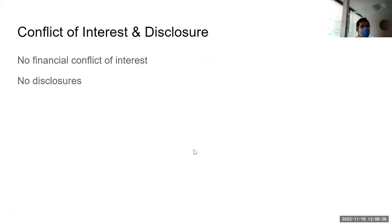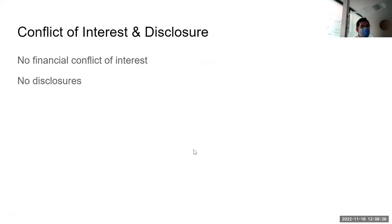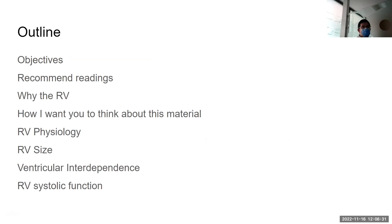I have no conflict of interest or financial disclosures. I'm going to cover learning objectives, some recommended readings, why I think the right ventricle is somewhat appropriate, how I want to think about some of this material and the echo findings. We'll review some RV physiology, how to interpret RV size, spend some time on interventricular interdependence, and of course common techniques for RV systolic function assessment.